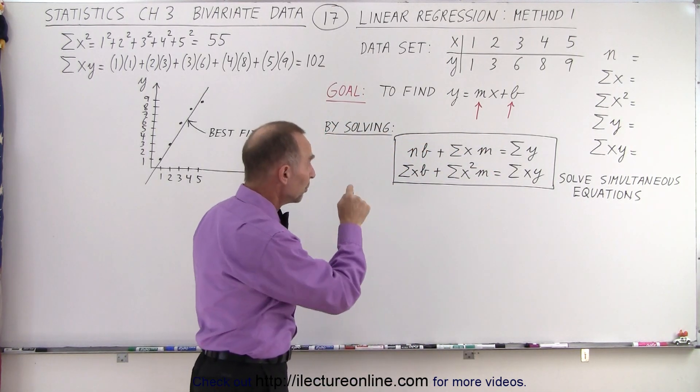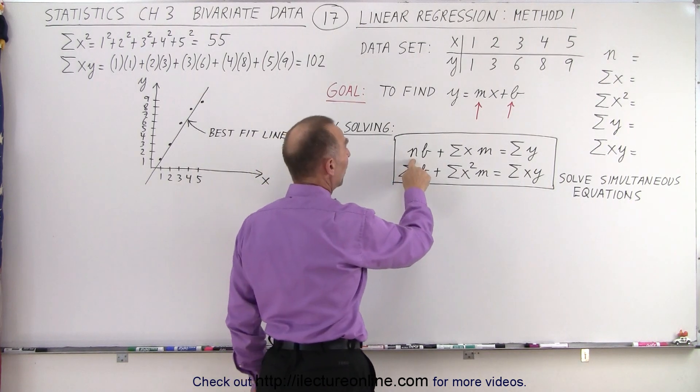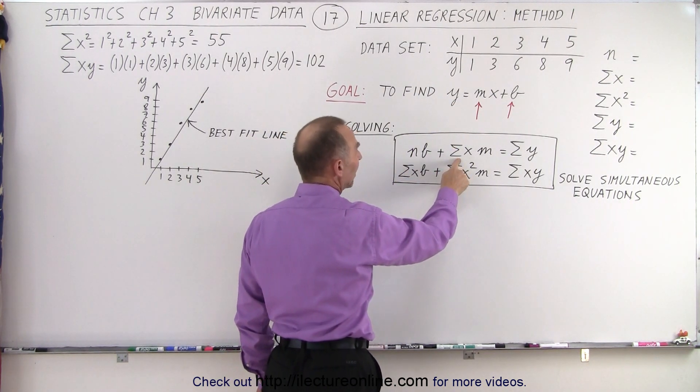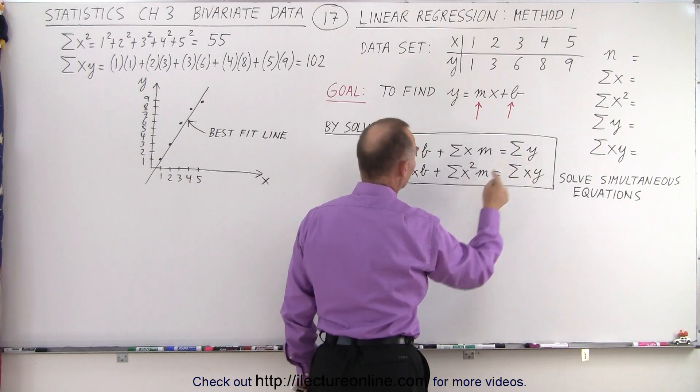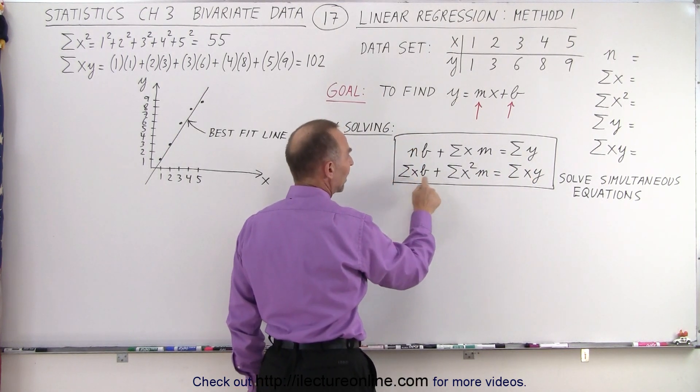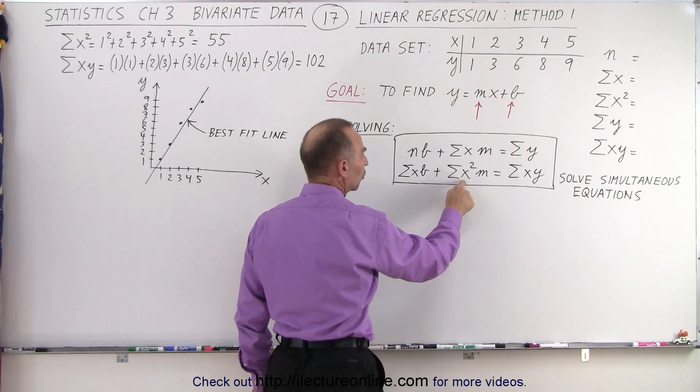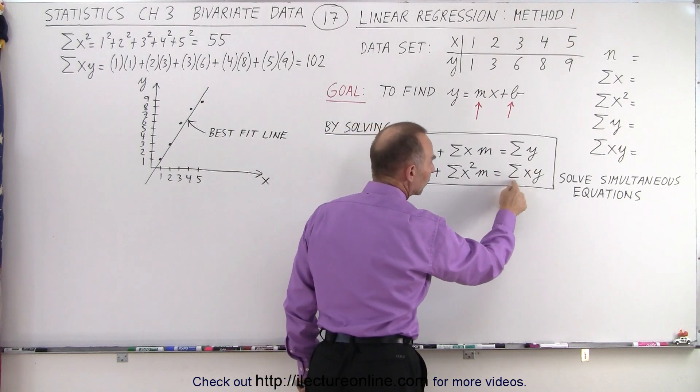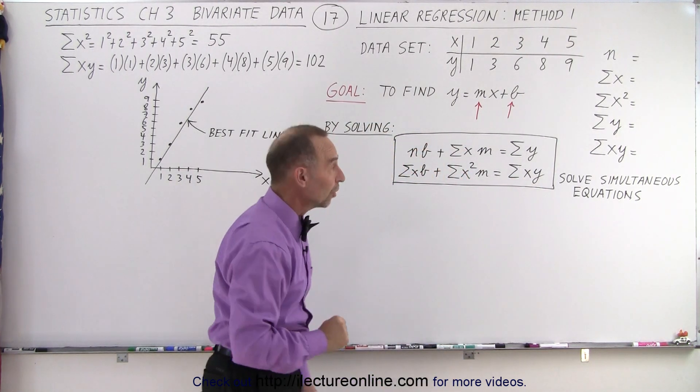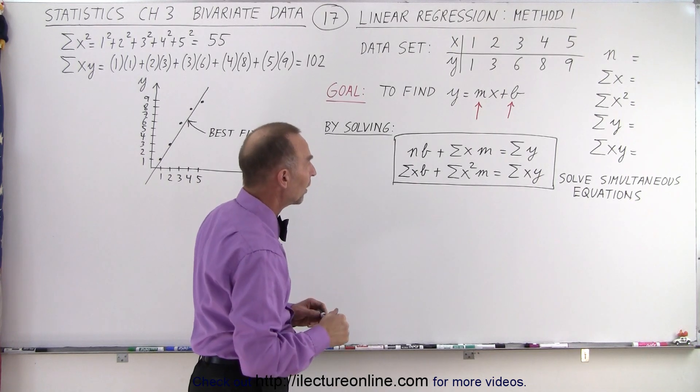What are the coefficients we need to put in there? n represents the number of data points, the sum of all the x values, and the sum of all the y values. Again, the sum of all the x values, the sum of all the x values squared, and the sum of the product of the x and the y values. So let's find what those are and then we go ahead and solve those equations.